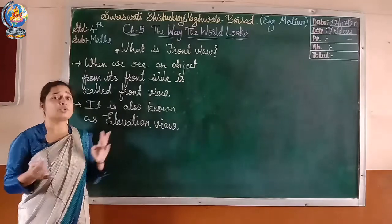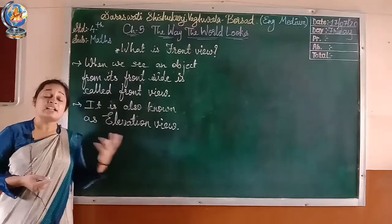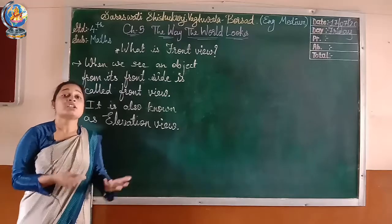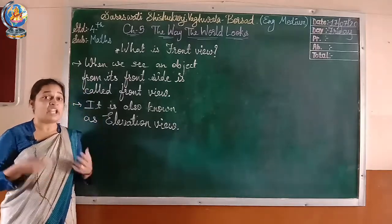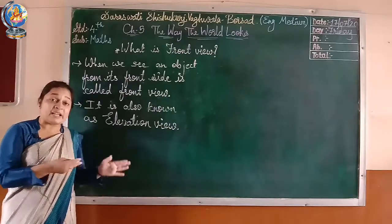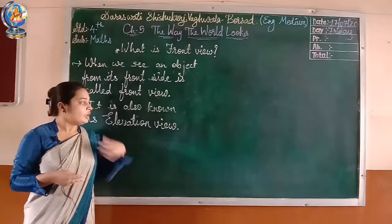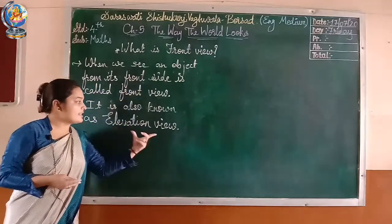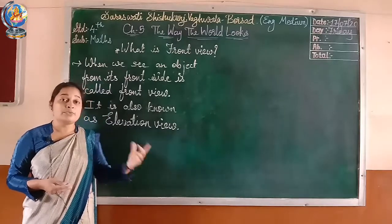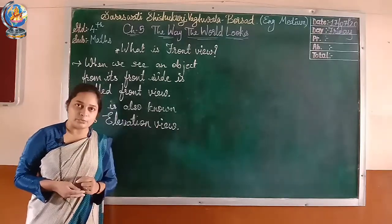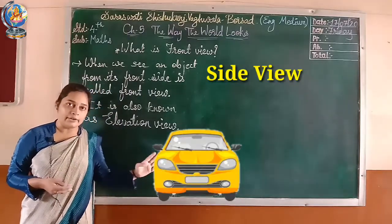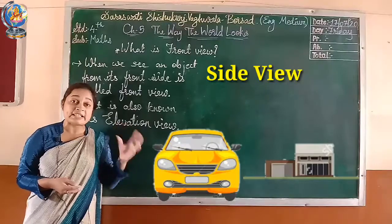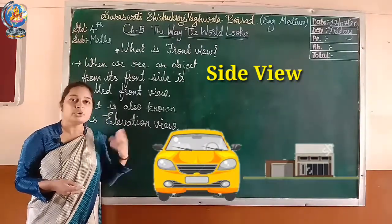This kind of top view, front view and all these things play a major role in engineering — whether it is civil engineering, software engineering, mechanical engineering, or aeronautical engineering. In their language, the top view is called a plan view and the front view is called an elevation view. You can see a car and a bungalow — both can be seen in top view as well as front view.